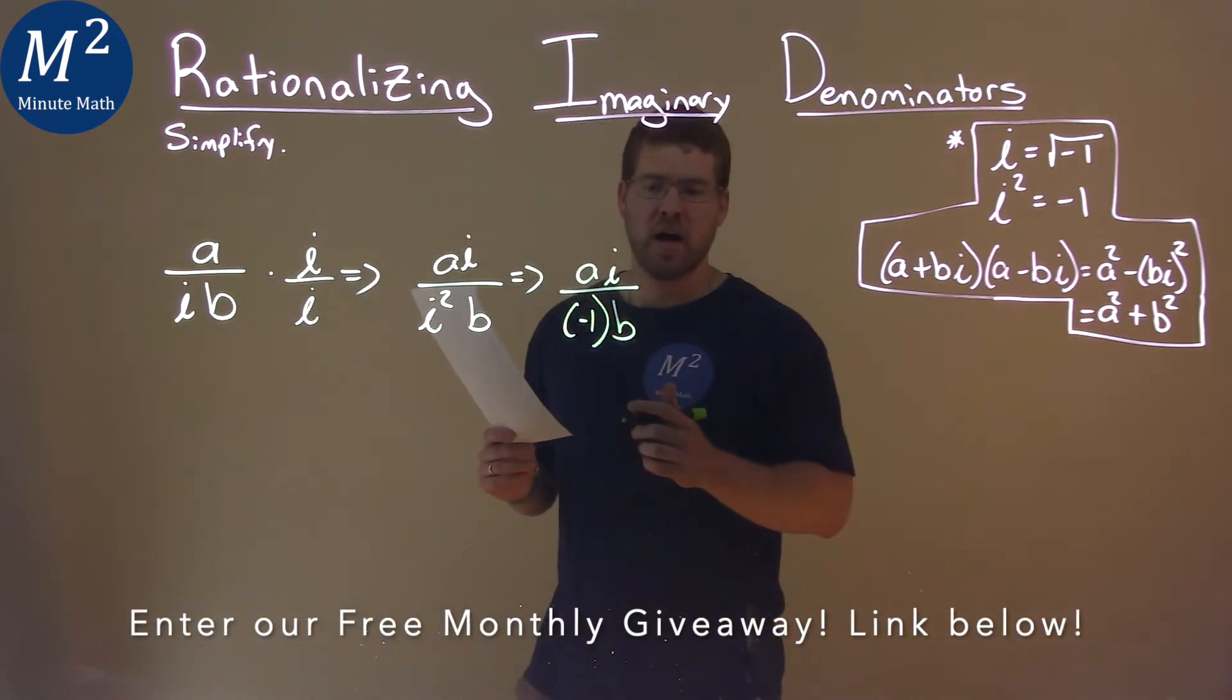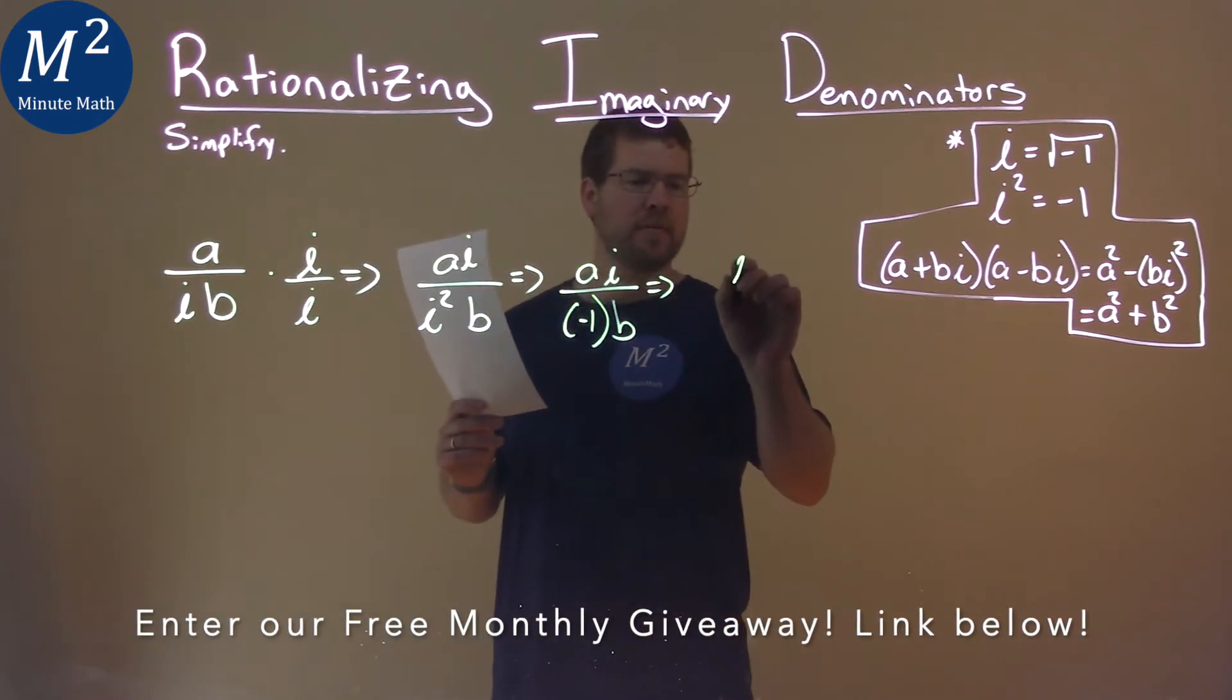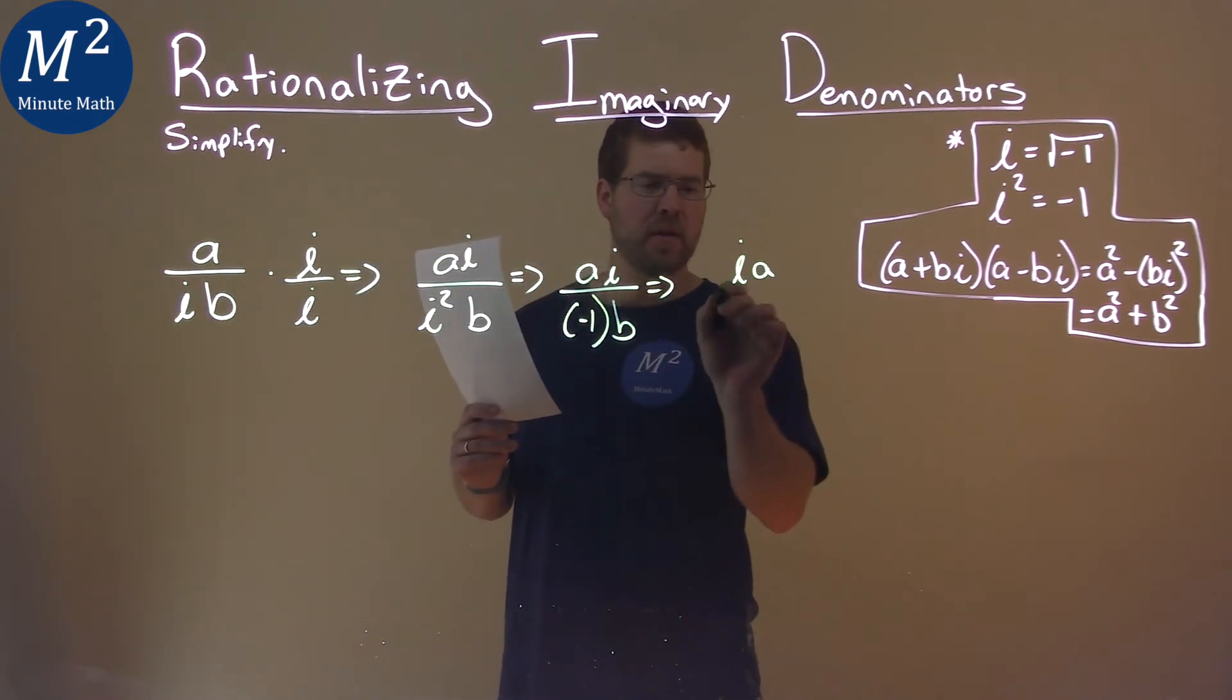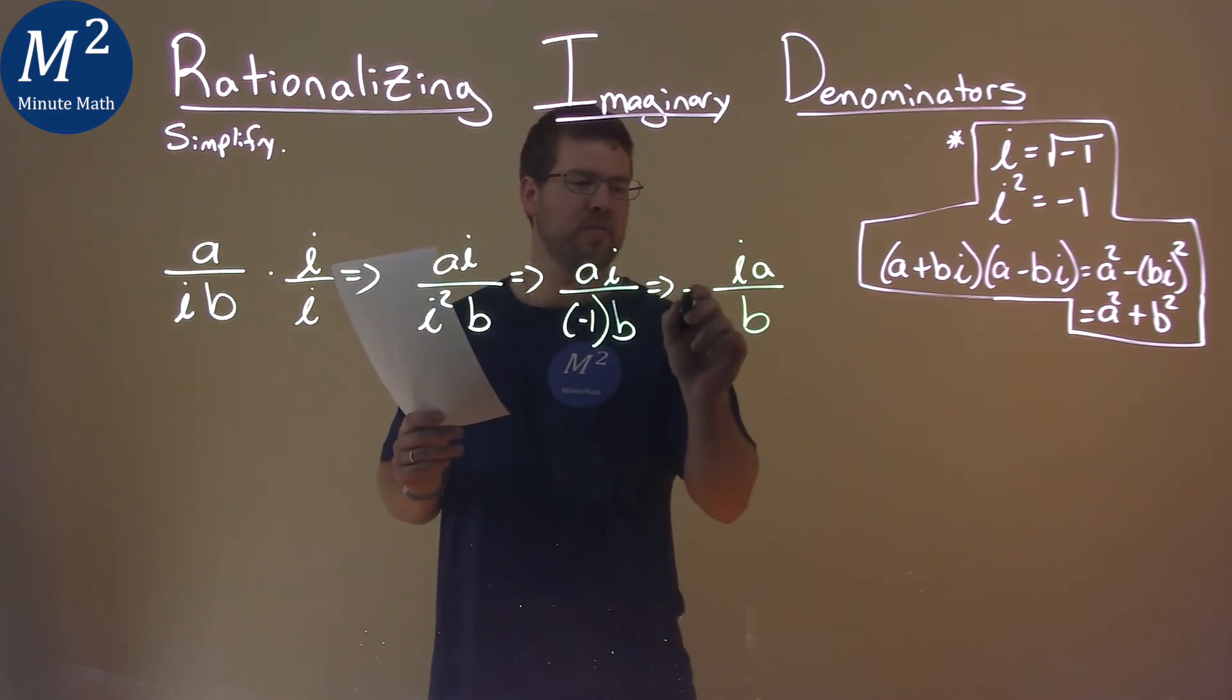And now we don't have an I in the denominator. So let's rewrite this. Let's put I first. I times A over B. And let's put the negative sign, just negative 1, out here.